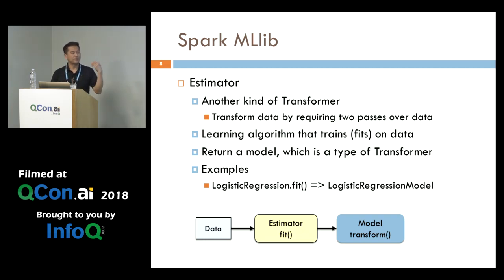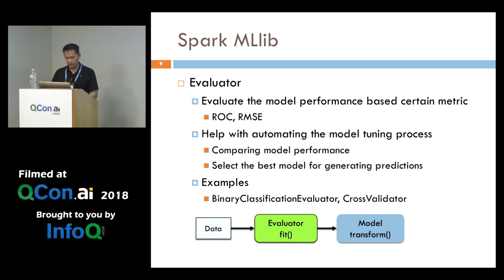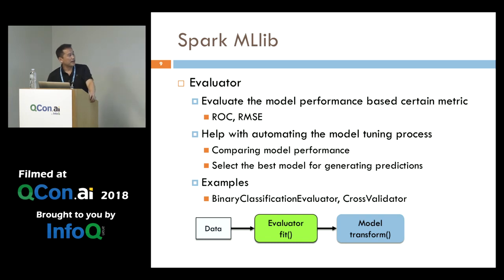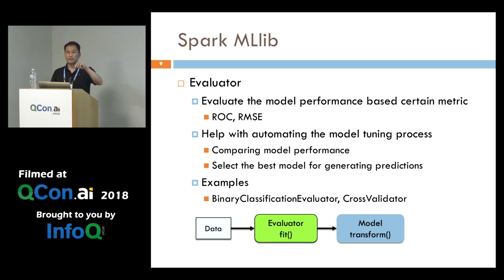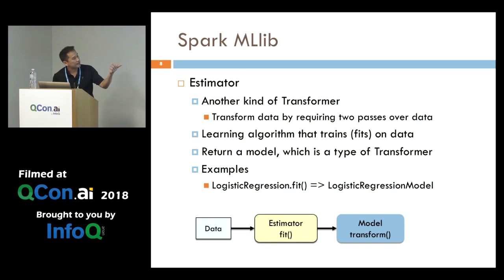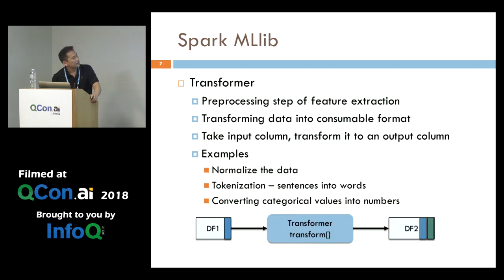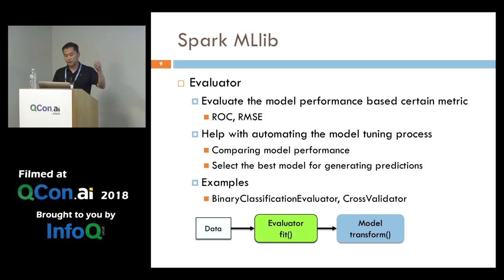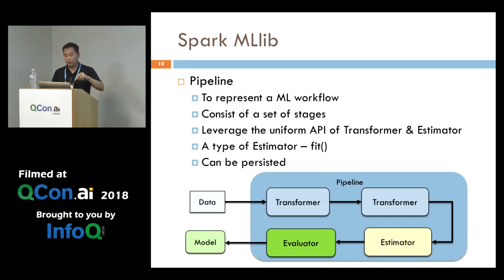Once you have a model, you want to do some evaluation to see how well it does. Spark MLlib provides a set of evaluators to calculate common metrics like ROC and RMSE. For binary classification you'd use the binary classification evaluator. There's also a cross-validator class, which is very cool for helping with parameter tuning. Each of these concepts is an abstraction with a specific method — the estimator uses fit and the transformer uses transform.